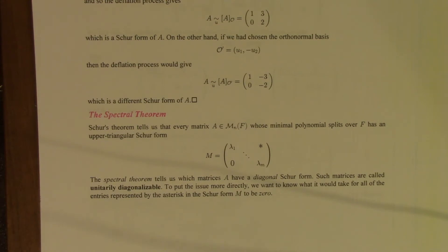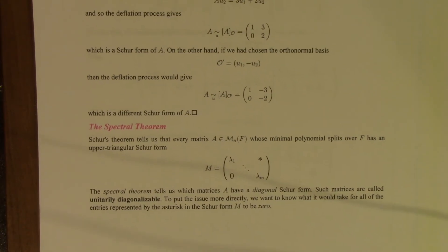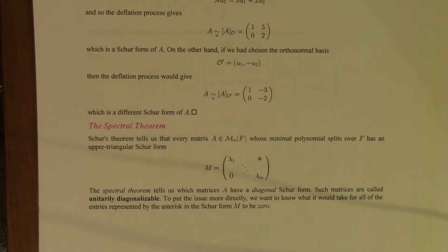Unfortunately, that's not a very easy property to check. We may not even be able to find the minimal polynomial, let alone see if it factors into linear factors. So that condition for diagonalizability is somewhat unsatisfying.